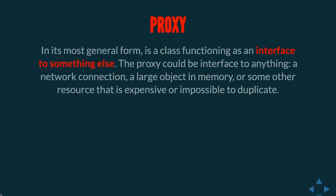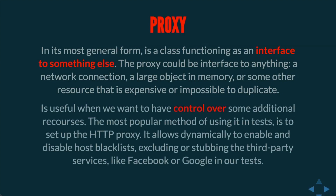Let's look at the proxy design pattern. In its most general form, it functions as an interface to something else — a network connection, large objects in memory, or some other resource that's expensive or impossible to duplicate, or when we want to do bookkeeping when performing operations over an object. It's very useful when you want control over an additional resource. The most popular use in tests is to set up an HTTP proxy, which allows dynamically enabling and disabling blacklists, enabling or disabling stubs, and excluding third-party services like integrations with Facebook or Google from our tests.